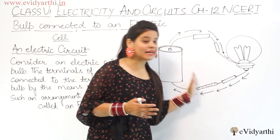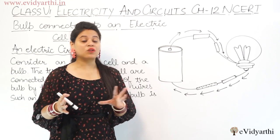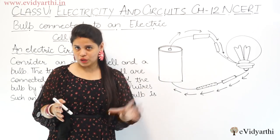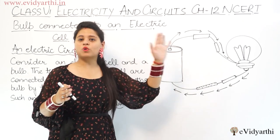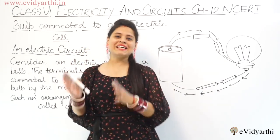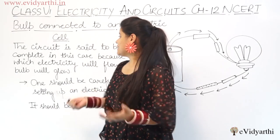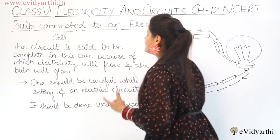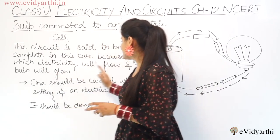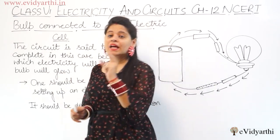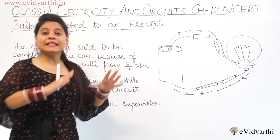This arrangement which we have set up, we call it an electric circuit. The circuit is said to be complete in this case, because of which electricity will flow and the bulb will glow. We can say that this circuit is complete.